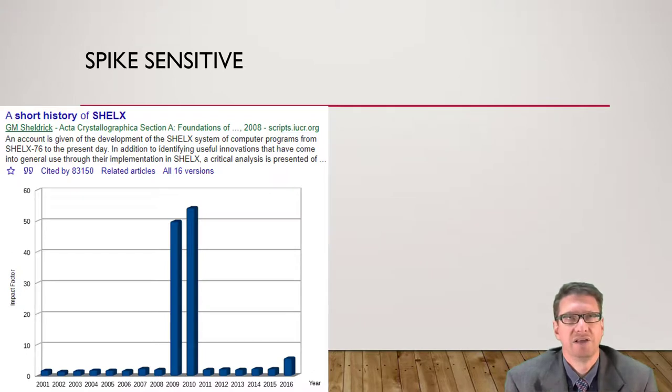Now the impact factor, because it calculates on a two-year basis and it looks at the last two years, counts the number of articles, counts the number of citations. It can have amusing effects. There was a very famous instance of a journal, Acta Crystallographica Section A,